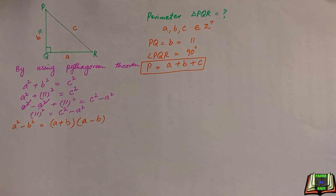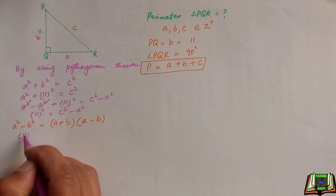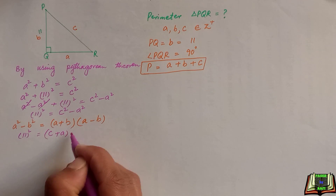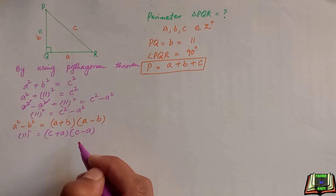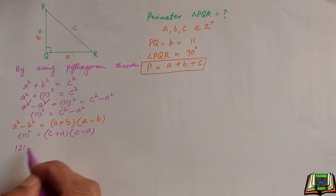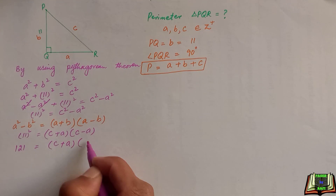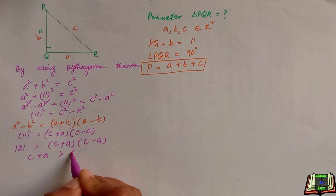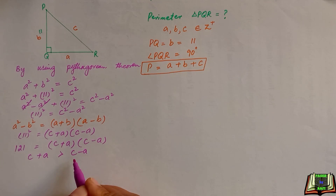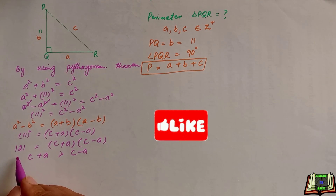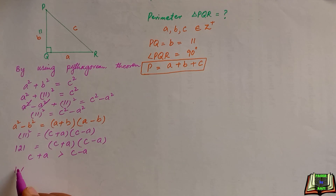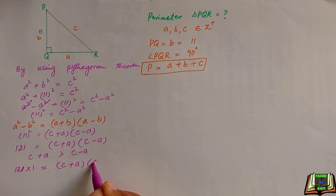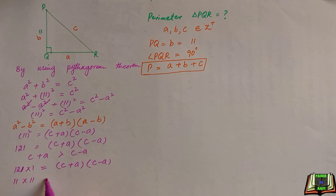So by writing this equation: 11 squared equals (C plus A) times (C minus A), and 11 squared equals 121. So (C plus A) times (C minus A) equals 121. Keep in mind that C plus A is greater than C minus A. Now 121 can be written as 121 times 1, and also as 11 times 11, both equal to (C plus A) times (C minus A).